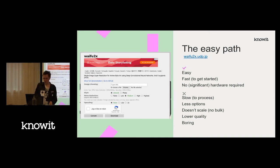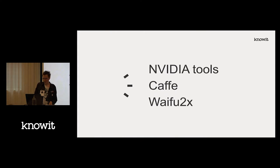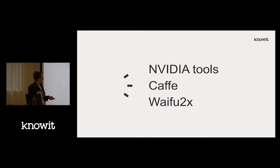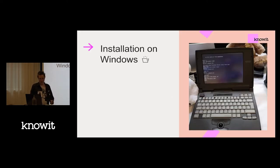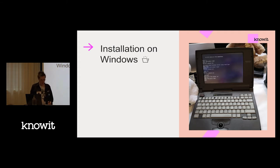On Windows, you basically have the NVIDIA tools at the bottom, then you have Caffe, and then the program on top. Installing it is not as easy — you don't just go online and download the program, you have to do some preparation.